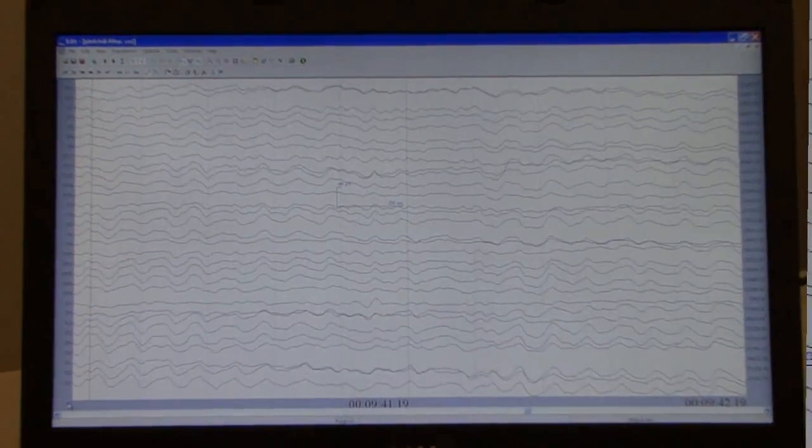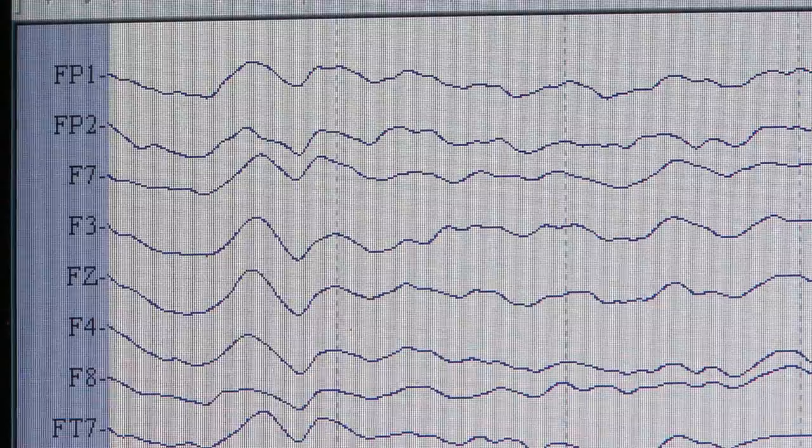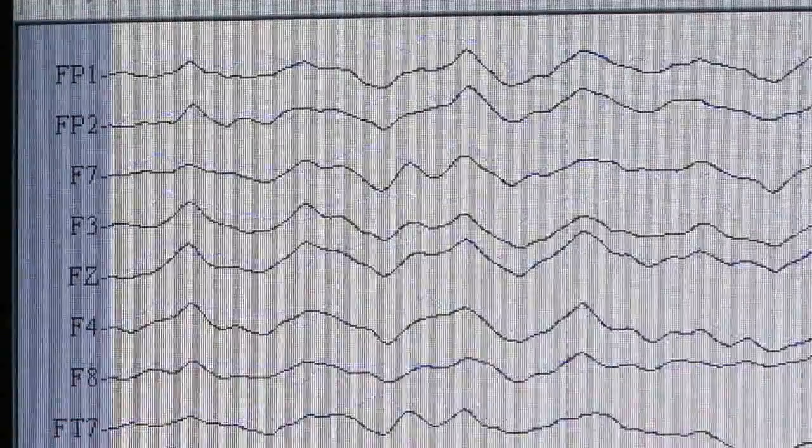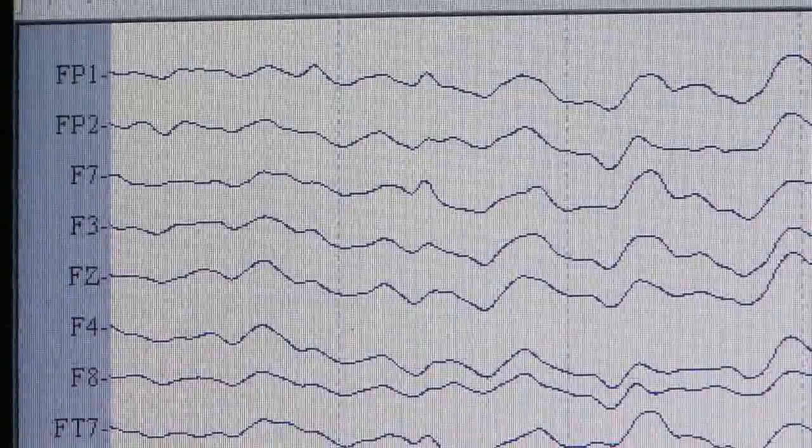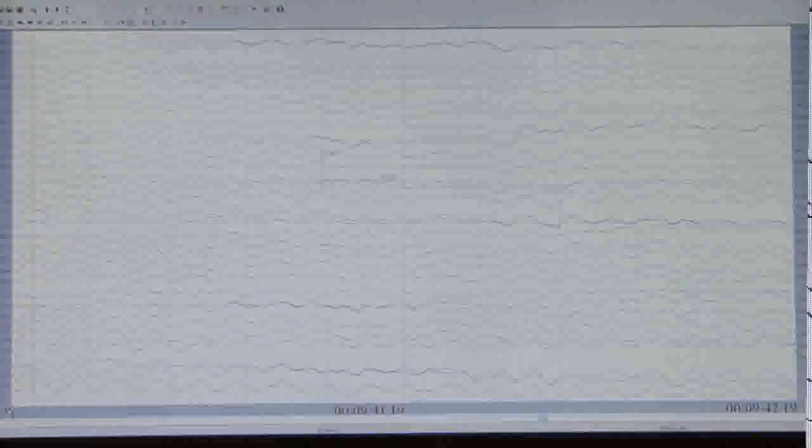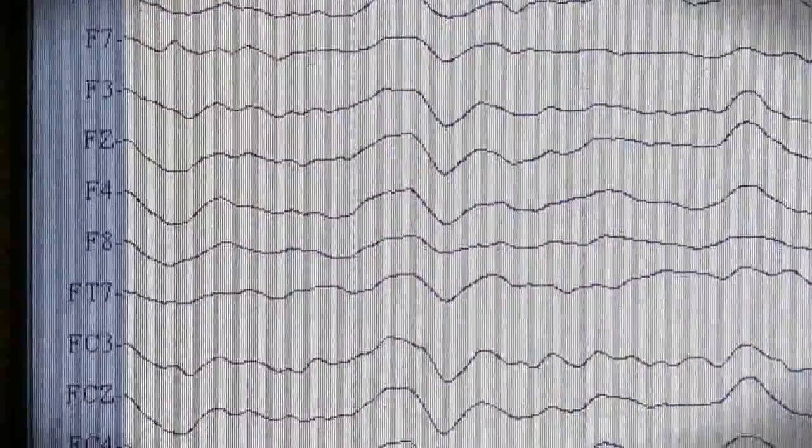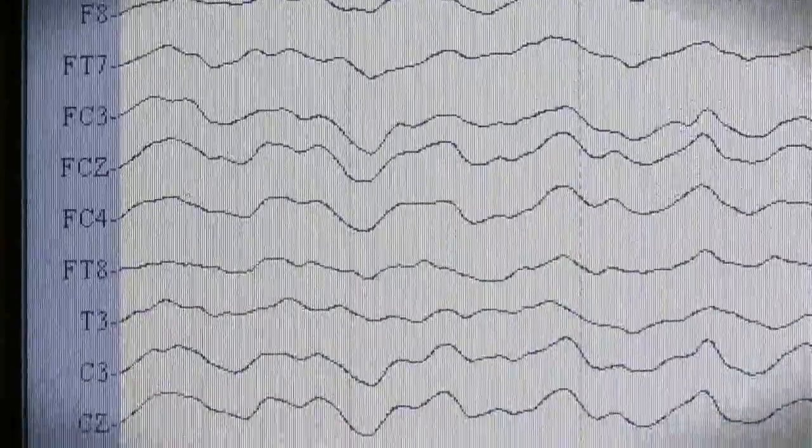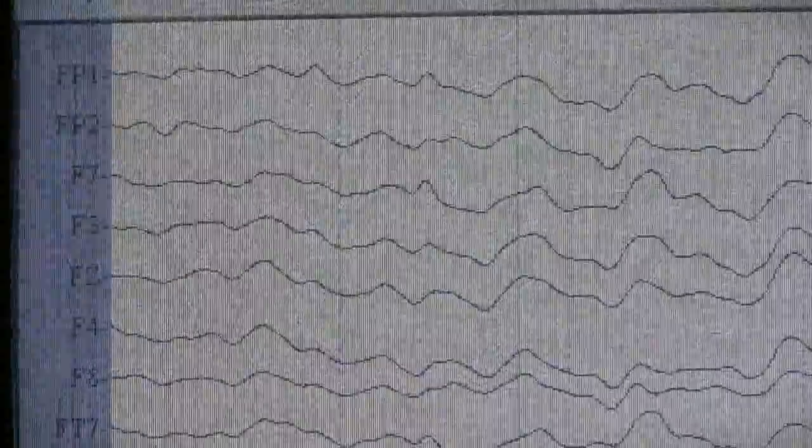When all of the electrodes are picking up a signal, we can start to see the brain activity as it comes off the top of the head. We can see one line from each electrode, so in this case we can see 40 signals coming from the cap. The top traces represent activity towards the front of the head, and as we move down the screen, we are showing activity towards the back of the head.